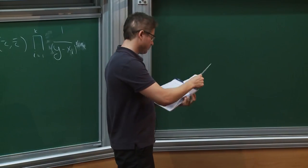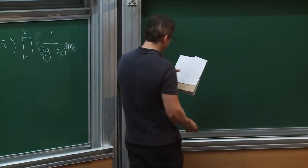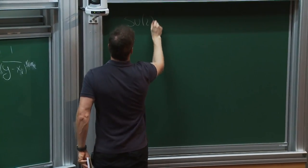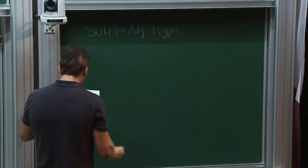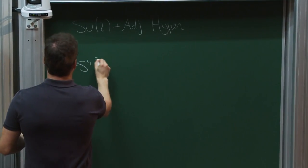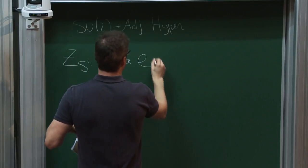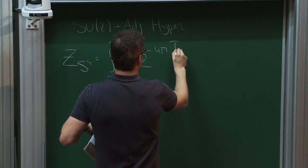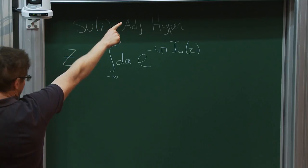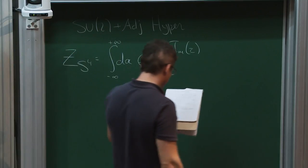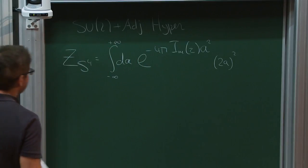I'll give you both cases in parallel. For SU(2) with an adjoint hyper—also known as N=4 super Yang-Mills theory—the four-sphere partition function is very simple. It's the integral over a real variable a from −∞ to +∞ of e^{−4π Im(τ) a²}, and then there is a factor of 2a² for normalization. The imaginary part of τ is essentially 1/g²_YM. For SU(2) with 4 fundamental hypers, the formula is significantly more complicated but still explicit: the same Gaussian factor times some special functions H(a) raised to the fourth power, times the instanton factor, whose absolute value is squared.